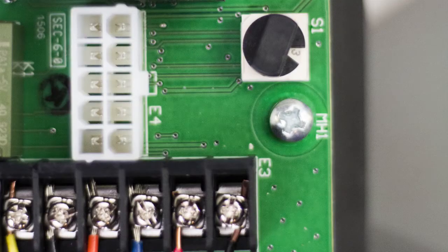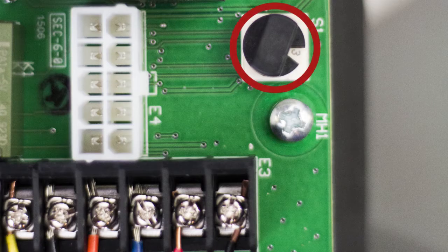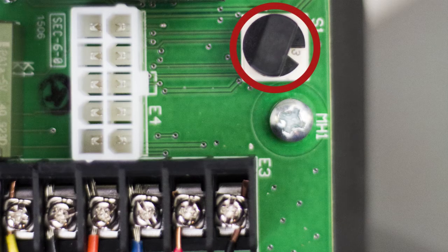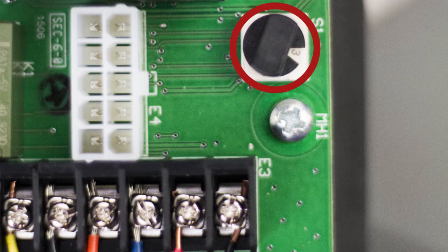There is a rotary switch on the lower right corner of the circuit board. This is used to set the retard time. The settings are in 10 second increments from 0 to 90 seconds.